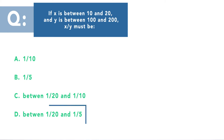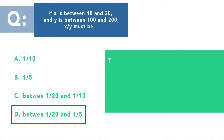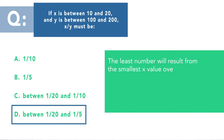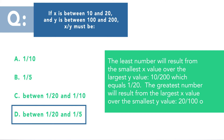The correct answer is between 1/20 and 1/5. The least number results from the smallest x value over the largest y value — so that's 10 over 200, which equals 1/20. The greatest number results from the largest x value over the smallest y value — which is 20 over 100, which equals 1/5.